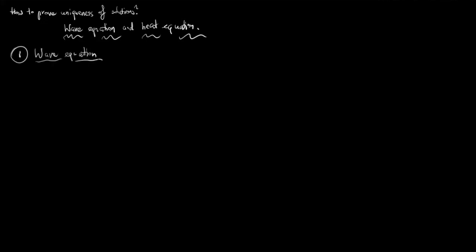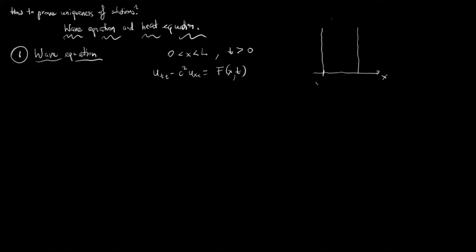Let us start with the wave equation. We have the wave equation in the form with some inhomogeneity, which could be zero. We consider this equation for x between zero and L and for t greater than zero. One can think that this PDE models the following physical situation: we have two rods, one at x equals zero and the other at x equals L, and we have a string which can slide along these rods.